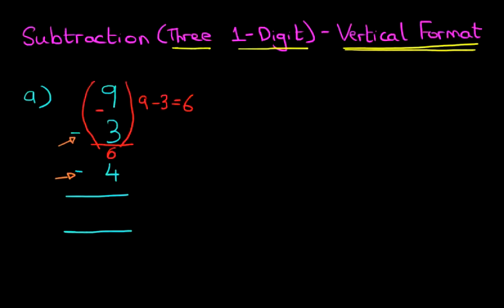The second part is, and we can put brackets again, it is 6 minus 4. So we've done 9 minus 3, the answer is 6, and now we're going to do 6 minus 4. What is 6 minus 4? The answer is 2. And that is the answer to the question.